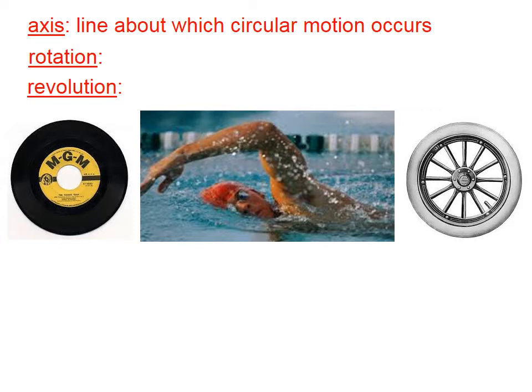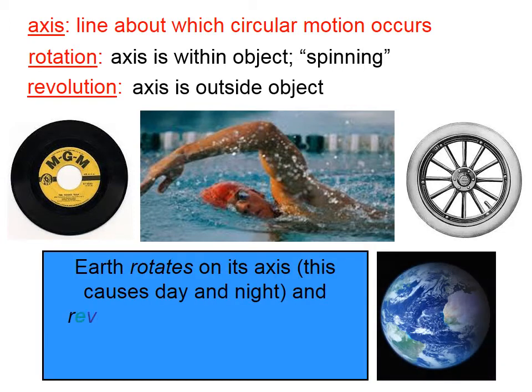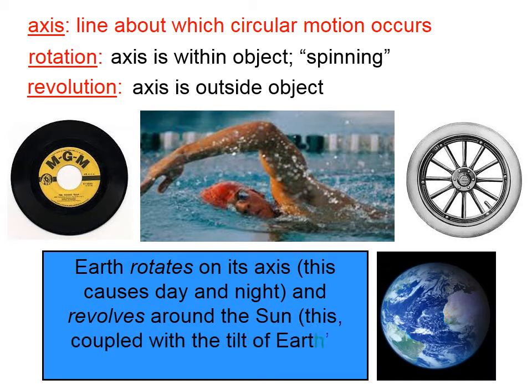The term rotation refers to the idea that the axis is within the object. When something is rotating, it is spinning. Revolution refers to the axis being outside the object. For example, the Earth rotates on its axis, which of course causes day and night, but it revolves around the Sun.